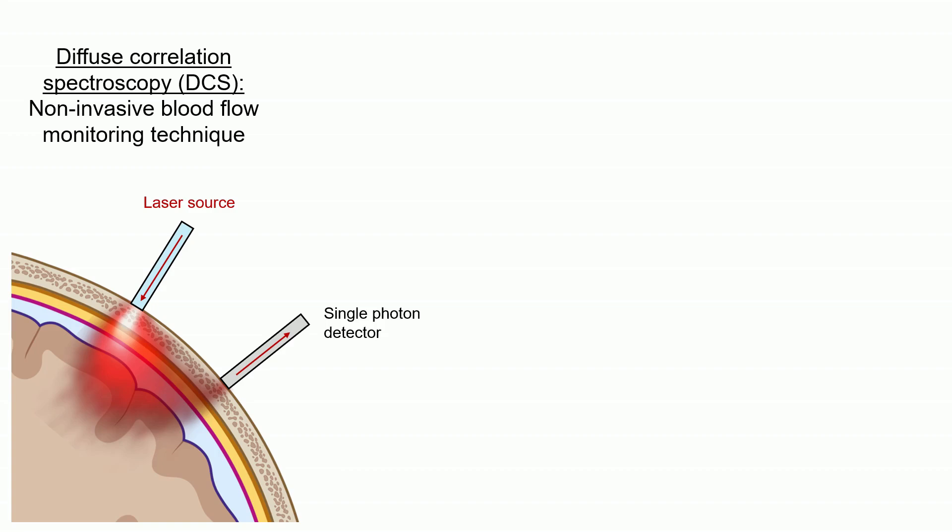In DCS, a laser in the near-infrared light range is used to shine light into the head from the surface of the scalp. The light gets scattered many times, going down into the brain tissue, and some of this light will scatter back upward out of the scalp again.